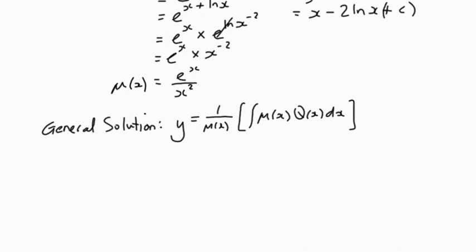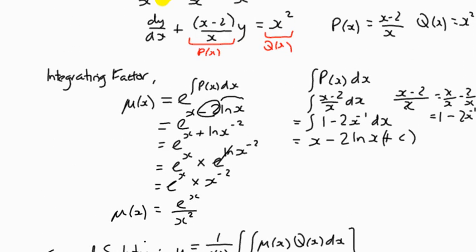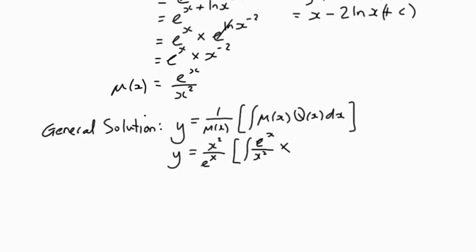So it's just a case of substituting in. The inverse fraction of μ(x) is just going to be x squared over e to the x—switch over the numerator and denominator. Then we're going to have the integral of e to the x over x squared multiplied by Q(x), which, if you look back to the very beginning, Q(x) is x squared. If it doesn't simplify, then something's going a bit wrong, because usually there's a way that we simplify this product before we integrate it.